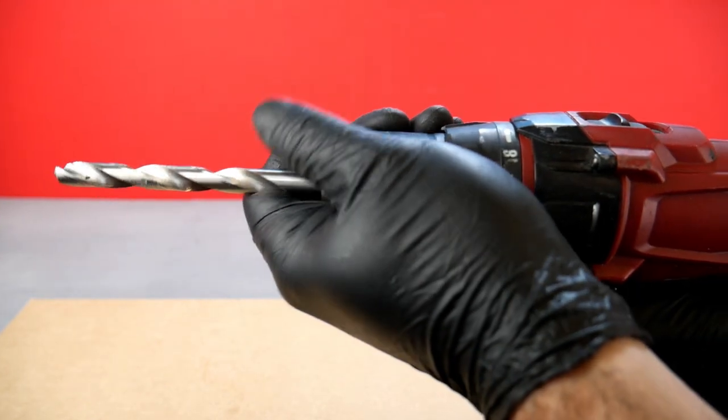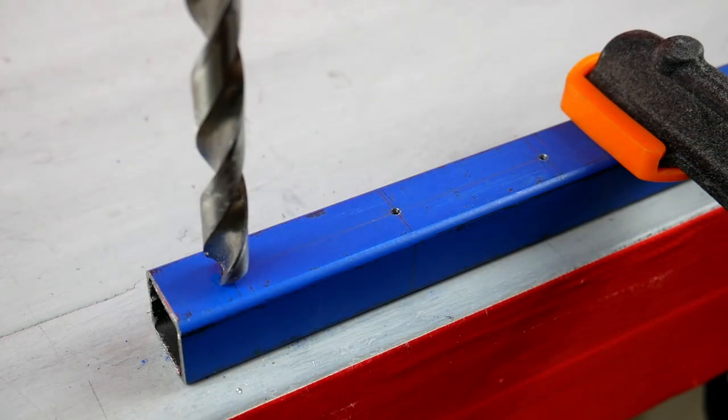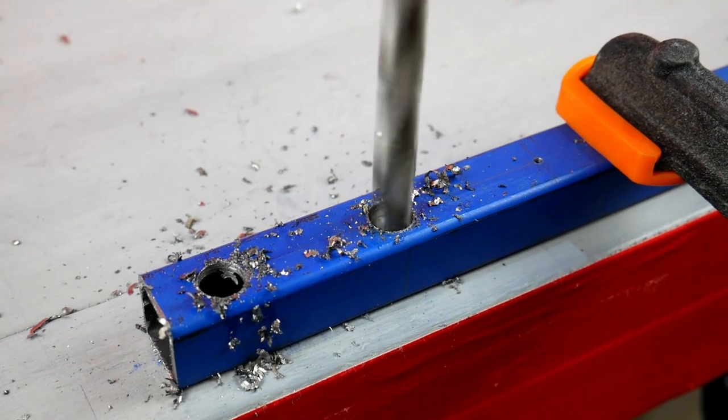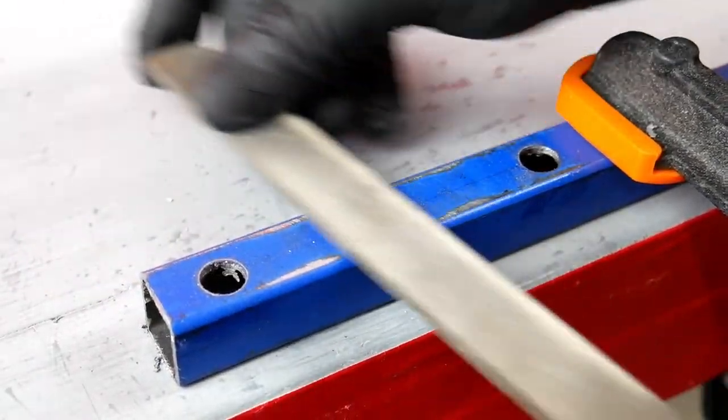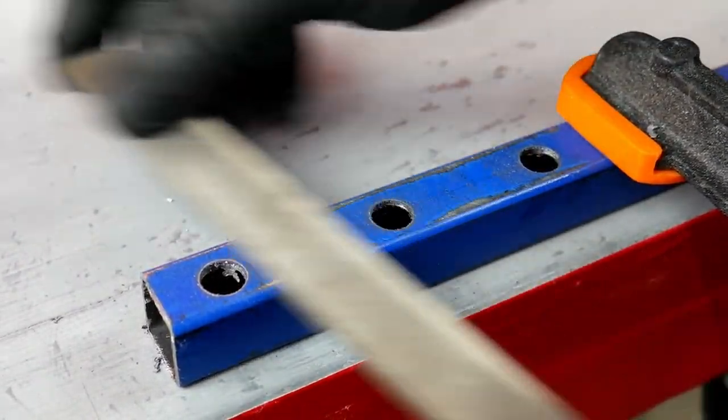Now I change to the 10mm bit. I use a drop of oil, and I drill all 3 holes on this side. And I clean up any mess with a file, and I repeat for the other side.